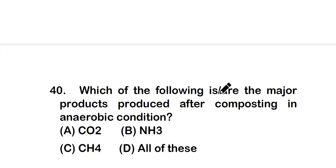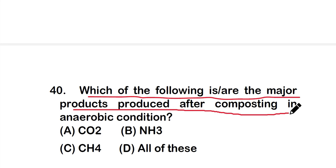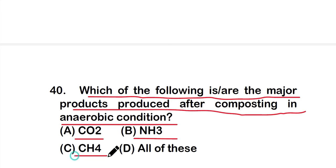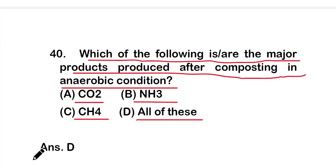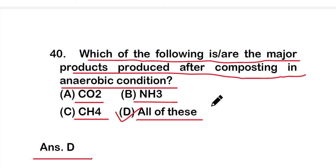Question number 40: Which of the following are the major products produced after composting in anaerobic conditions? Options: A) CO2, B) NH3, C) methane, or D) all of these. The right answer is option D — all of these are the major products produced after composting in anaerobic conditions. These are all 20 questions of Part 2 of the environmental microbiology topic. Thank you for watching this video.